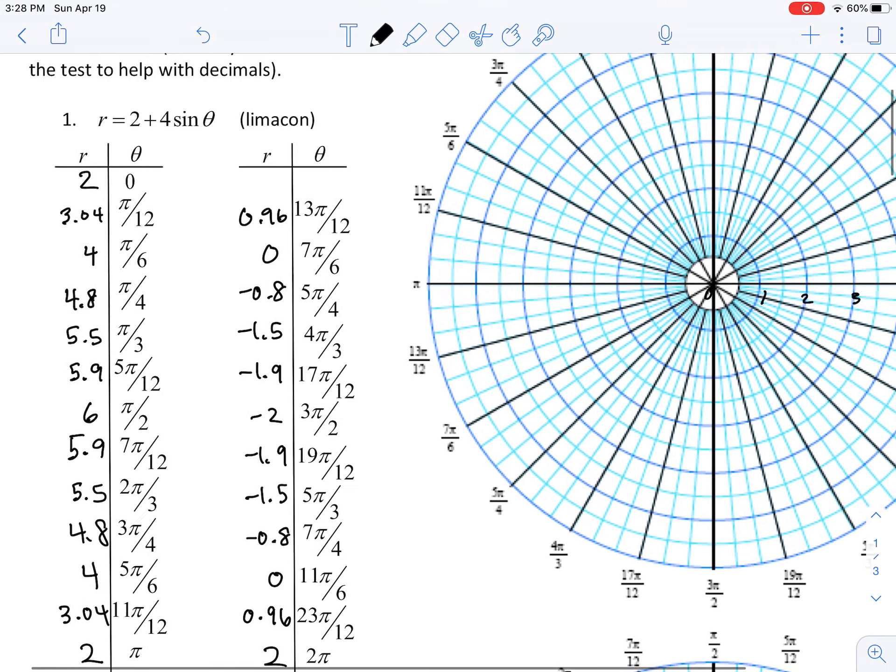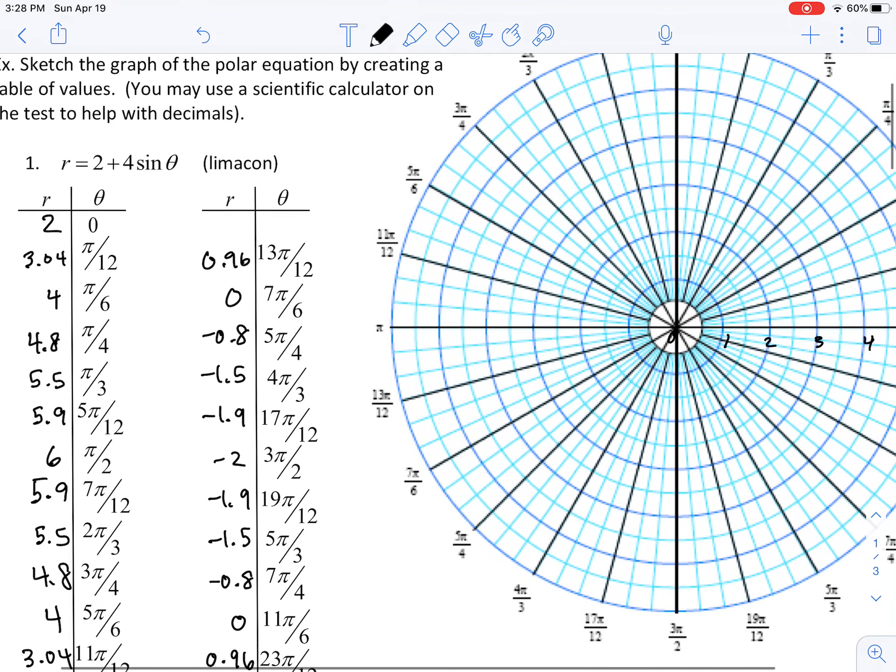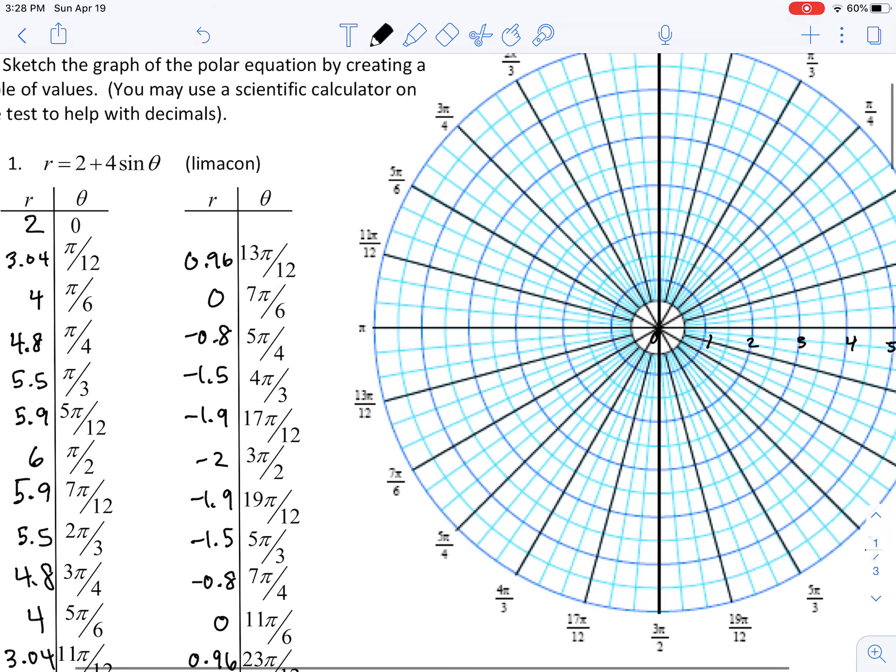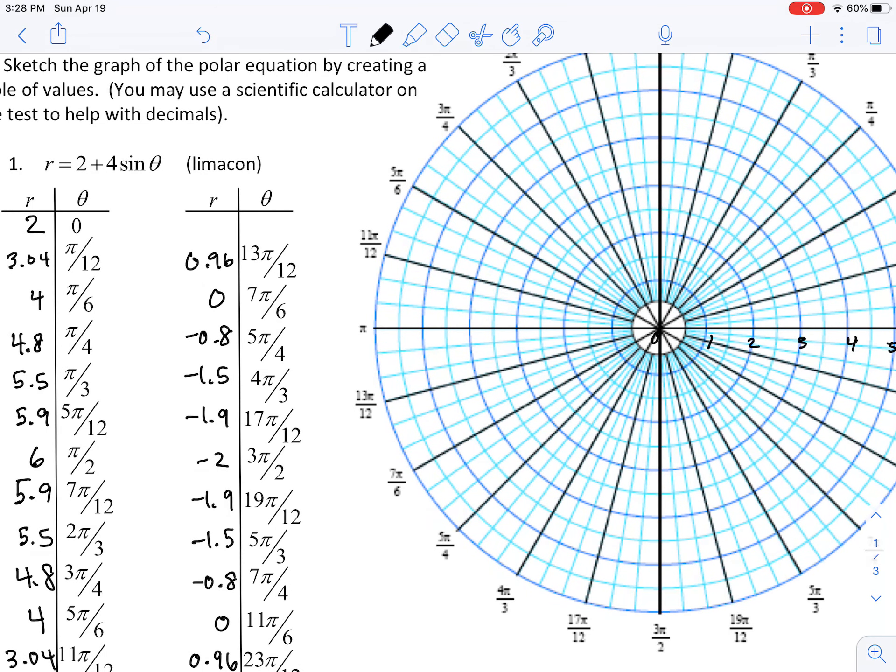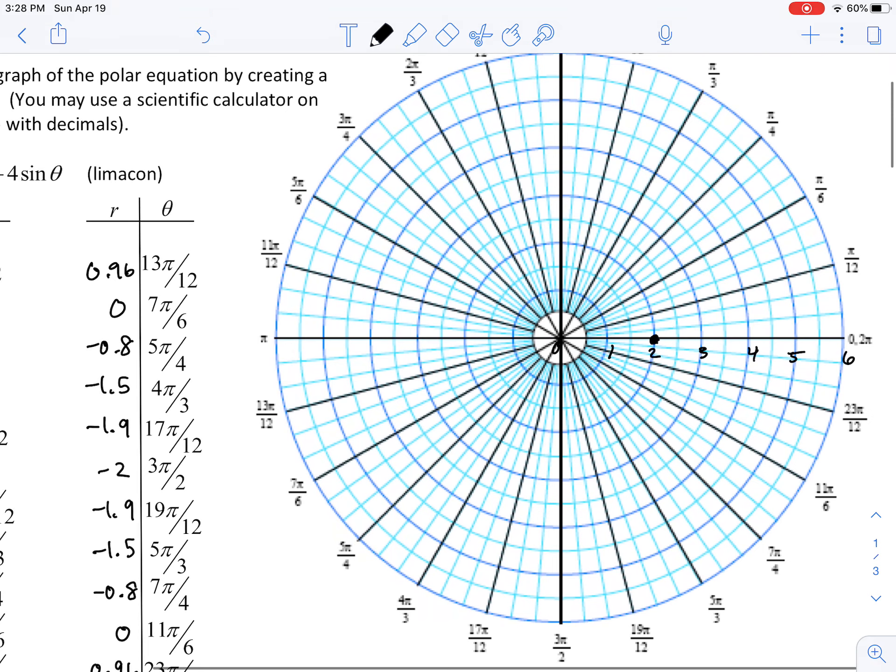Now let's just go ahead and start plotting them. Let's do the first couple. So when our angle is theta, or excuse me, when our angle is zero, our r value is two. So we're going to plot a point right over here. There's two. When theta is equal to pi over 12, we get 3.04. So we're going to just plot a point that goes a little bit after three there.